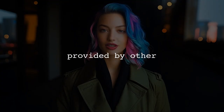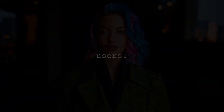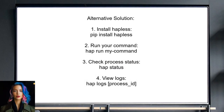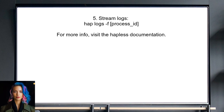An alternative approach is to use the hapless utility. First, install it with pip. Then you can run your command using hap run, check the status of all processes with hap status, and view logs for a specific process using hap logs.